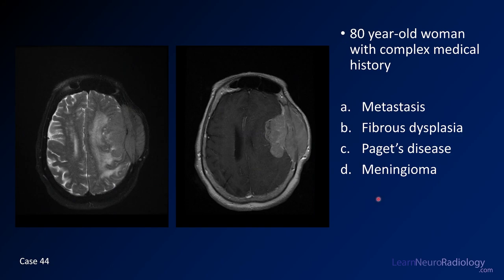Case number 44 is an 80-year-old woman with a complex medical history including hypertension. These are images from her brain MRI — a T2 and a post-contrast. Your choices are metastatic disease, fibrous dysplasia, Paget's disease, or meningioma.